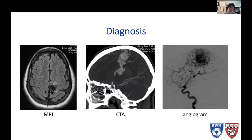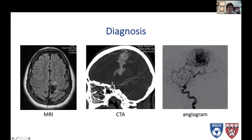How do we diagnose AVMs? AVMs can be diagnosed using different imaging modalities, including an MRI. On the left here, you can see the AVM as sort of a haze. With a CTA, you can see the brain a little less well but the vessels a bit better. And then on the other end of the spectrum is an angiogram where you don't see the brain at all and you just see the vessels. It is important to get different imaging modalities to really fully evaluate an AVM.